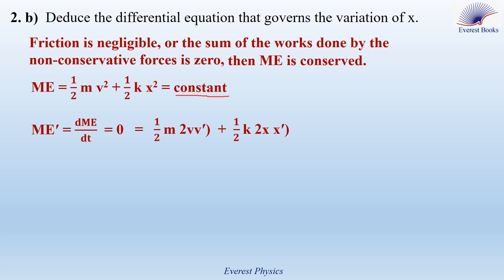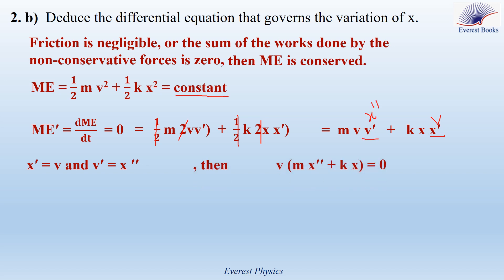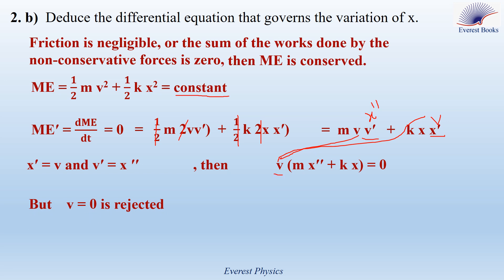The derivative of one half mv² is mv·v′, and the derivative of one half kx² is kx·x′. So we get mv·v′ plus kx·x′ equals 0. Since x′ equals v and v′ equals x″, taking v as a common factor, we get v times (mx″ plus kx) equals 0. We now have two solutions: v equals 0, or mx″ plus kx equals 0.